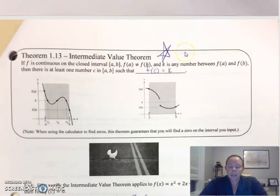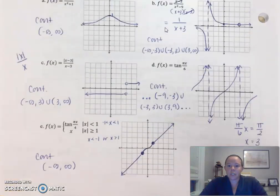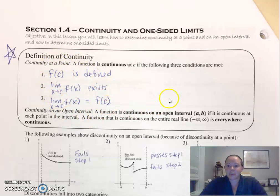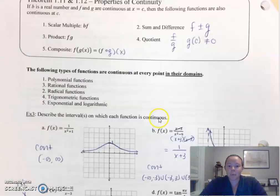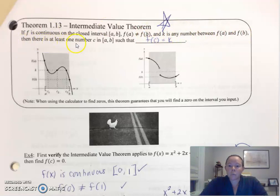Intermediate value theorem — this is a big one. Notice I put a big star on it, and also on the definition of continuity — you need to know this. If f is continuous on the closed interval from a to b, where f of a does not equal f of b, and k is any number between f of a and f of b, then there exists at least one number c in the interval a to b such that f of c equals k.